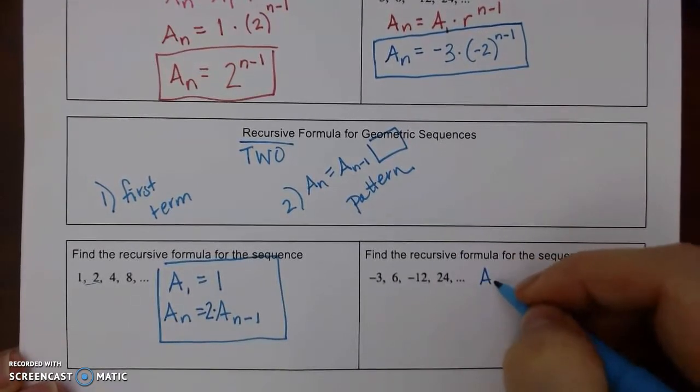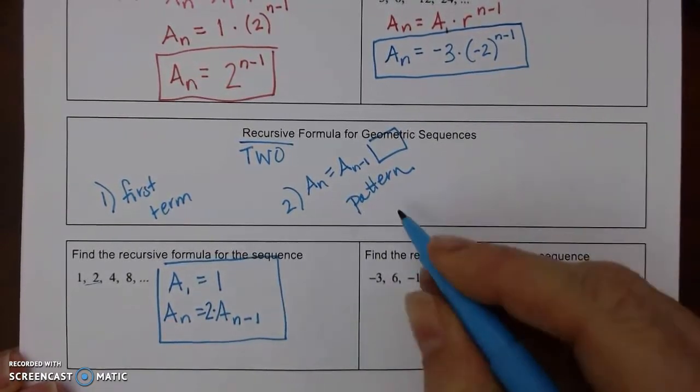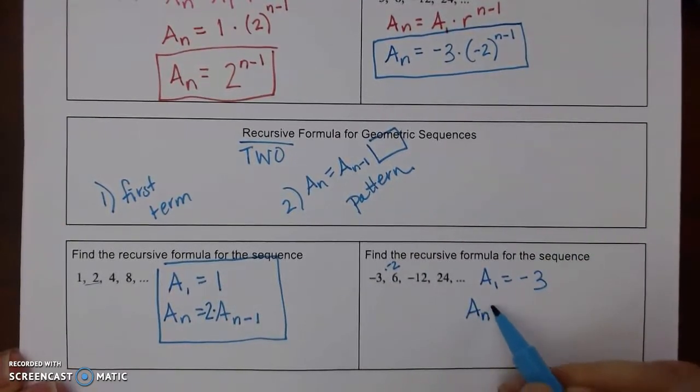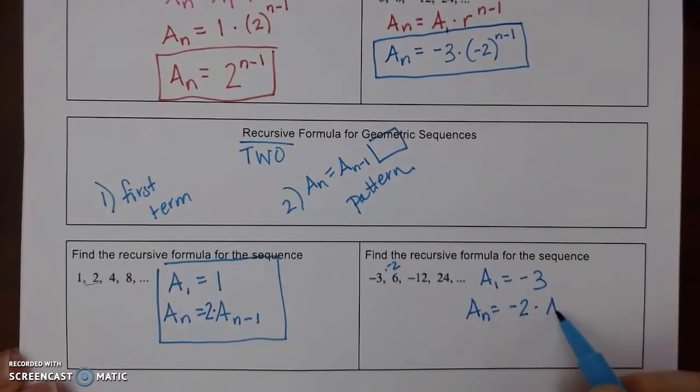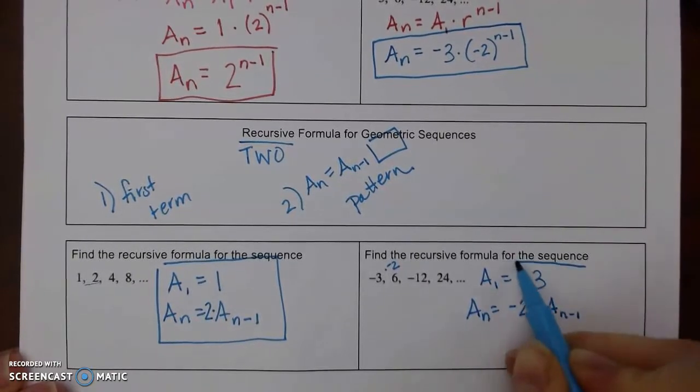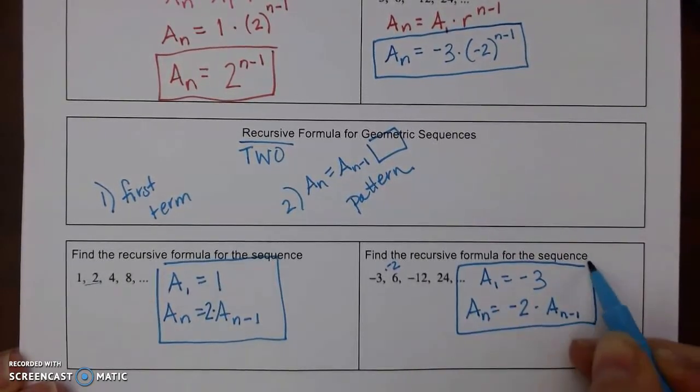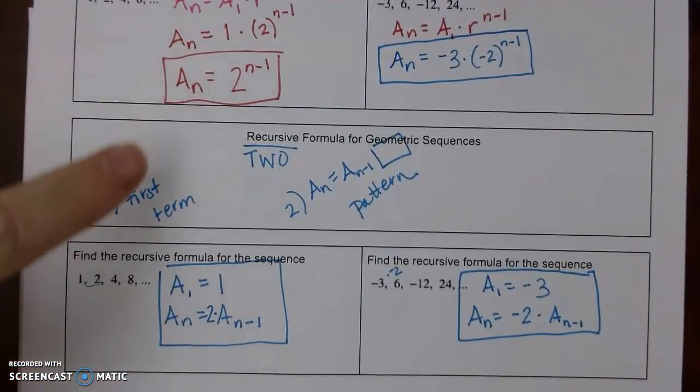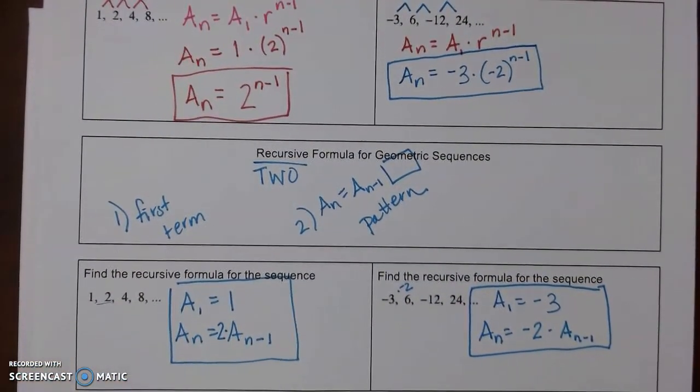Same thing. We know our first term. And our pattern was to multiply by negative 2. So we've got negative 2 times our previous term. So notice they don't look the same. They have some similarities.